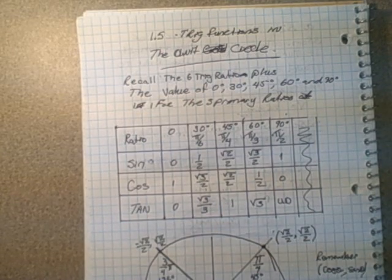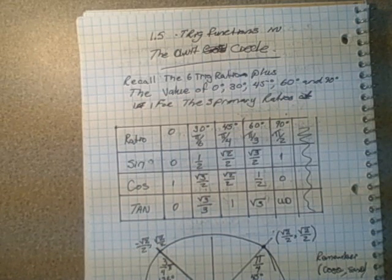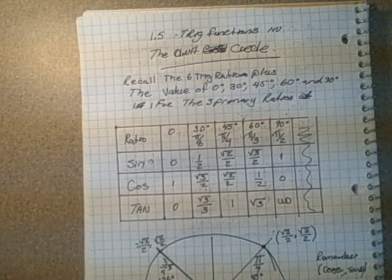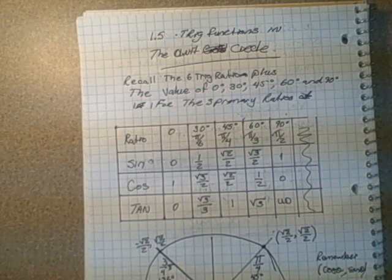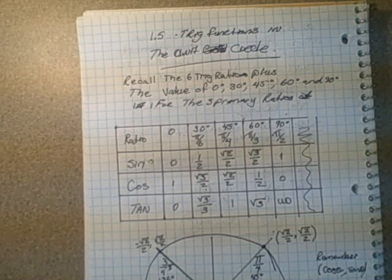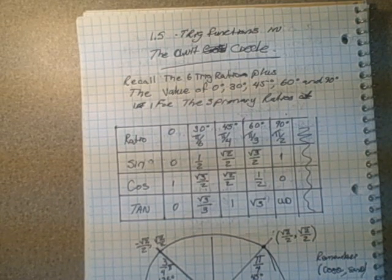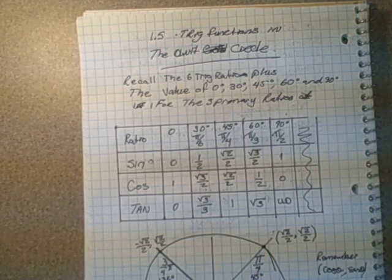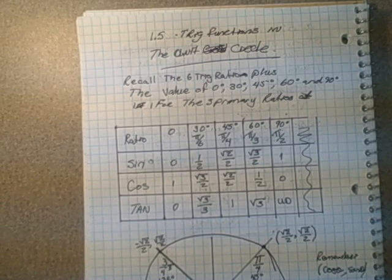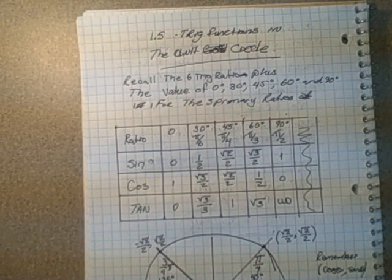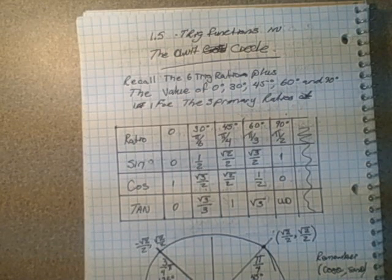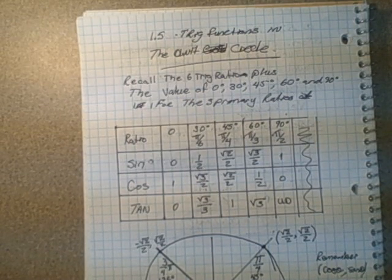This tutorial is for section 1.5, trigonometric functions in the unit circle. While there's not a ton of questions in that section, the unit circle, trigonometric ratios, and special triangle relationships are very important. We're going to derive the whole unit circle in our notes. We've probably done it in class already, but I'm going to redo it here in case it was difficult for you.